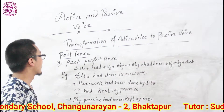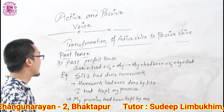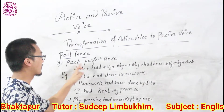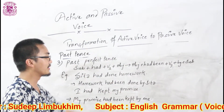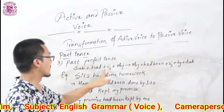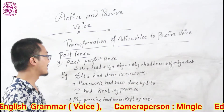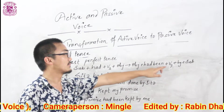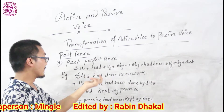We have already learned the two structures related to past tense changing into passive voice. Now we are going to learn the next structure: past perfect tense. The structure of past perfect tense is: subject plus had plus V3 plus object. While changing this structure into passive voice, subject becomes object and object becomes subject. Then 'had plus V3' will be changed into 'had been plus V3'. You should remember: if V3 is used in the sentence, we have to use 'been' plus V3. If you keep that in mind, it will be much easier.